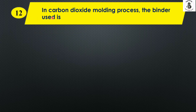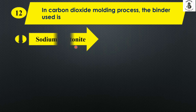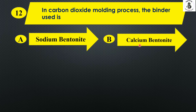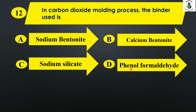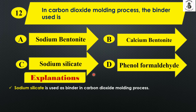In the carbon dioxide molding process, the binder used is: Option A sodium bentonite, Option B calcium bentonite, Option C sodium silicate, and Option D phenyl formaldehyde. In the CO2 molding process, the most preferred binder is sodium silicate. The right answer is Option C.